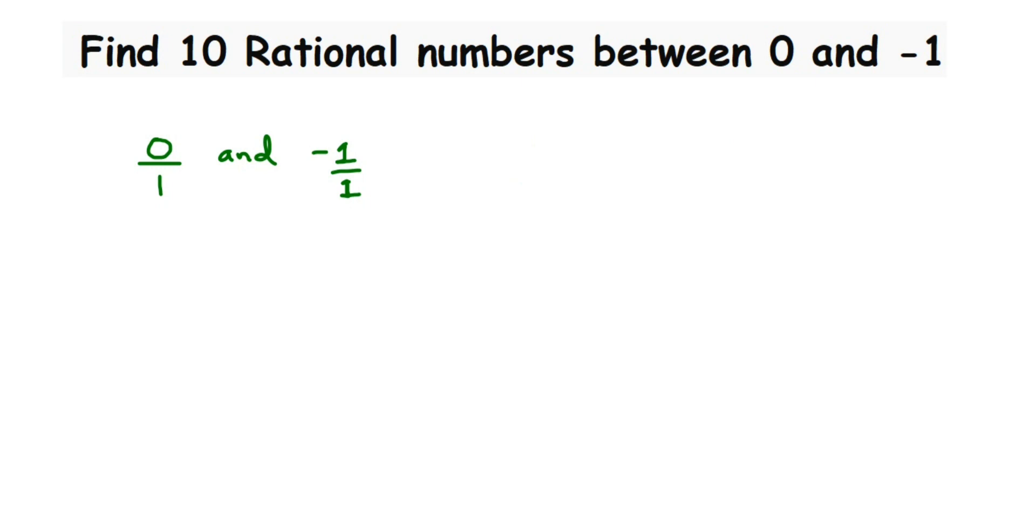The question is to find 10 rational numbers, so I'm going to take a number greater than 10. 0/1, I'm going to take 20 here. Multiply numerator and denominator by 20: it equals 0/20, or just 0.